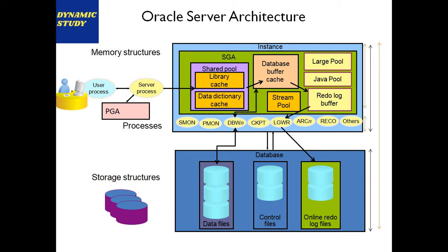Stream pool is a pool provided by Oracle when configuring streaming for replication. Large pool is a pool used when running RMAN or backup recovery tools — it stores RMAN caching information. Also, if a large number of connections exist and the shared pool is fully utilized, it can borrow space from the large pool. Ideally the large pool is used for RMAN, but the shared pool may also use it.